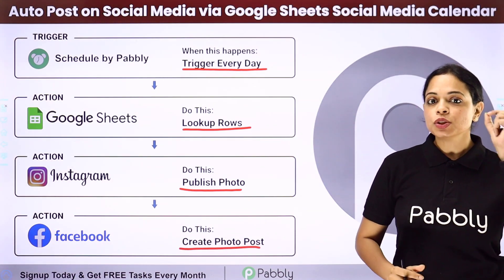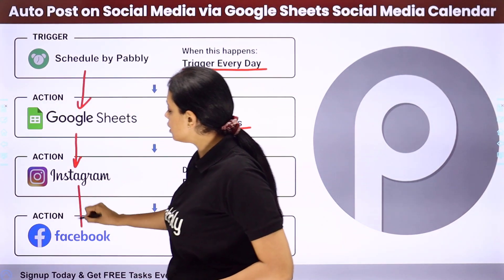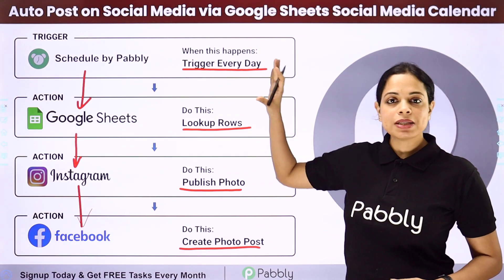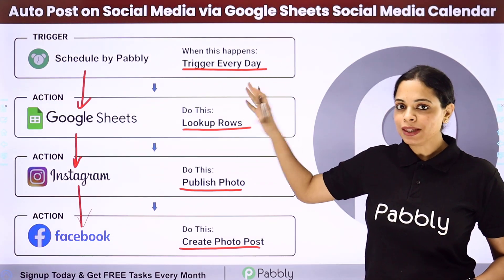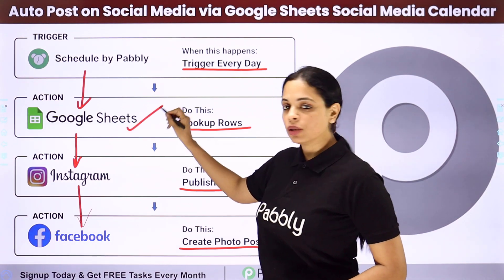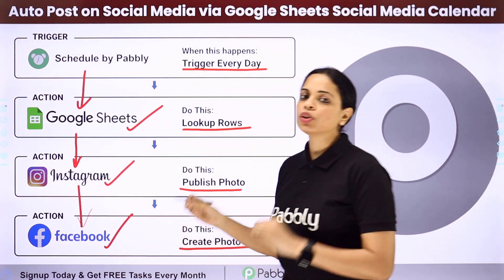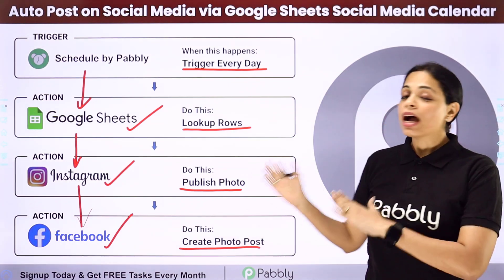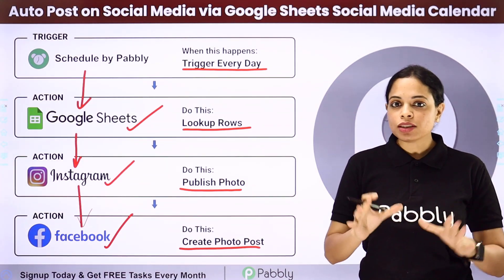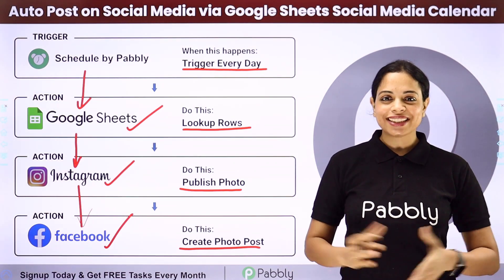To do this, you will need to integrate these applications, and that can be done using Pabbly Connect. Your trigger application will be Schedule by Pabbly, and your action applications will be Google Sheets followed by all the social media platforms you want to integrate. Let me take you to my screen to show you how to automate this entire process.